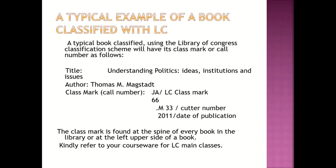Let's look at a typical example of a book classified with LC. We are not expected to know in detail how to classify a book, because perhaps we will not end up being librarians. But the essence of this is for you to know the codings being used in different libraries. A typical book classified using the Library of Congress Classification Scheme will have its class mark or call number as follows. For example, the title 'Understanding Politics: Ideas, Institutions, and Issues' by Thomas M. Magstadt. The class mark will be JA66.M33.2011.